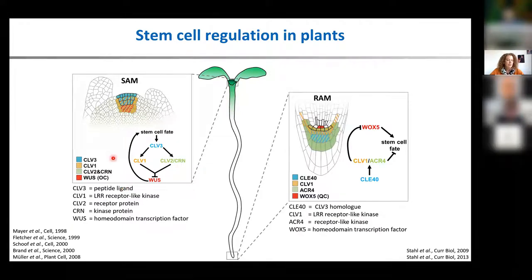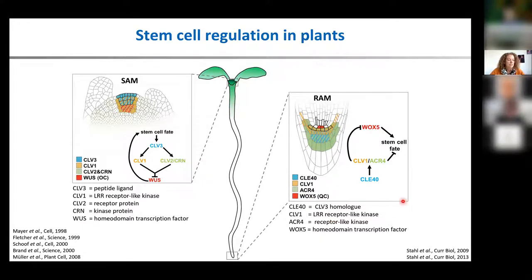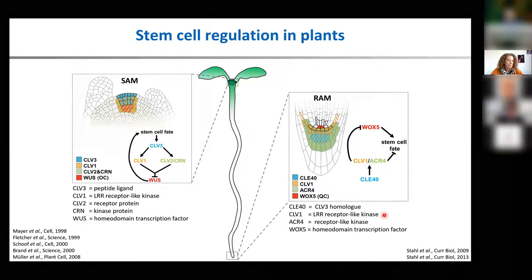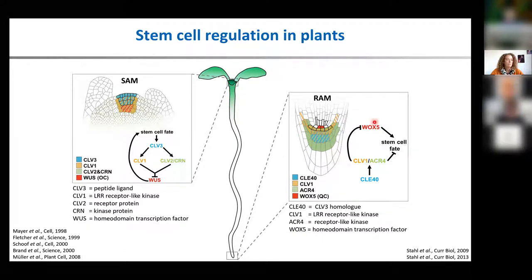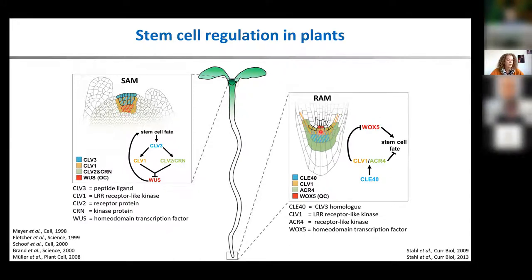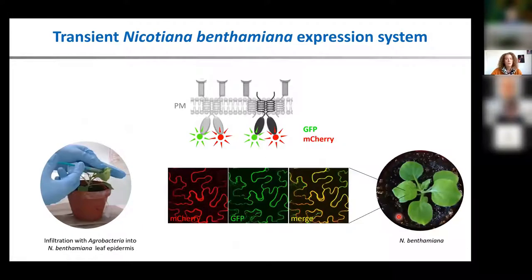We could also show that there is a similar but slightly different way in which the root apical meristem is maintained — also with a small peptide, the Clavata 3 homolog CLE40, also with receptor-like kinases present in the root apical meristem, which regulate a homeodomain transcription factor called VOX5, expressed in the quiescent center. A lot of our observations about which players are necessary for stem cell homeostasis in the root or shoot are made by using fluorescently labeled proteins or receptors.